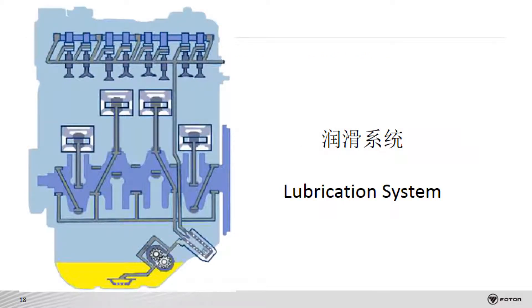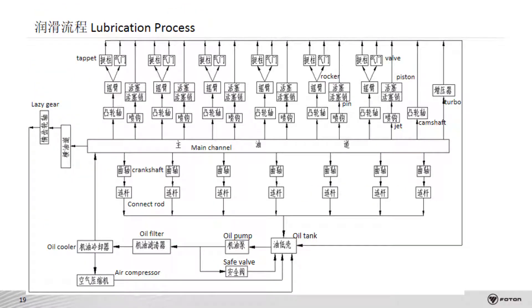For the lubrication system, we need to understand the system flow. It can be used to simply identify fault points from the lubrication process and also to help us with the inspection sequence for maintenance. The inspection sequence always follows from the outside, from simple to complex.